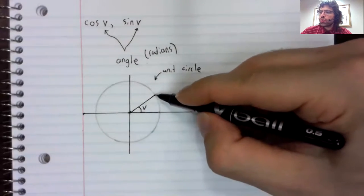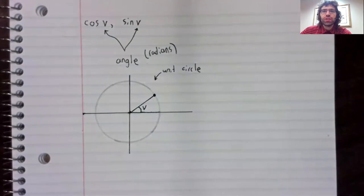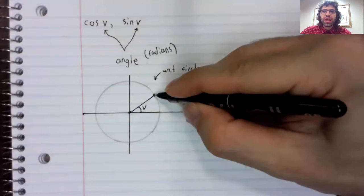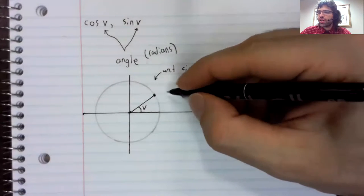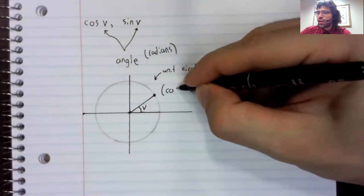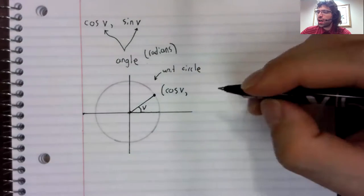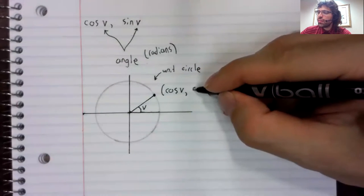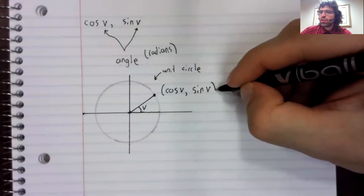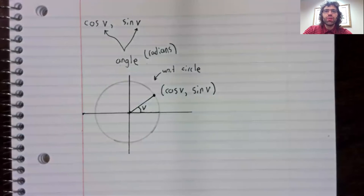the terminal side of the angle hits the unit circle. And this point has an x coordinate and a y coordinate. And the x coordinate is called the cosine of v, and the y coordinate is the sine of v.